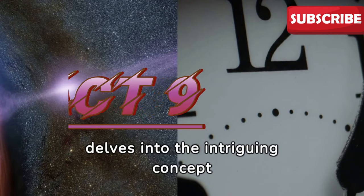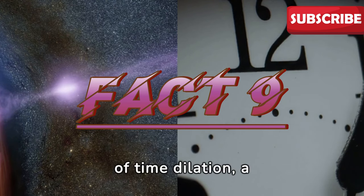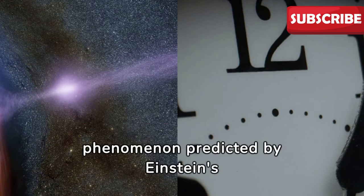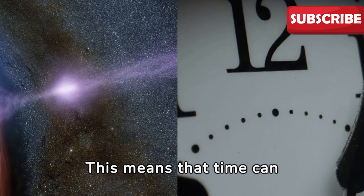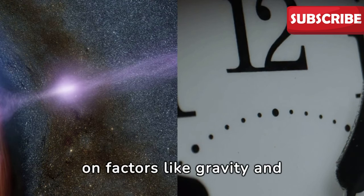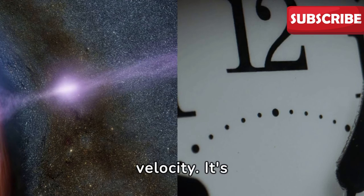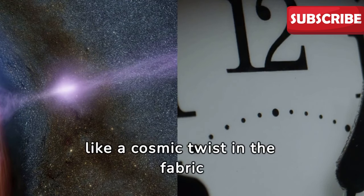Fact number 9 delves into the intriguing concept of time dilation, a phenomenon predicted by Einstein's theory of relativity. This means that time can pass at different rates depending on factors like gravity and velocity. It's like a cosmic twist in the fabric of time itself.